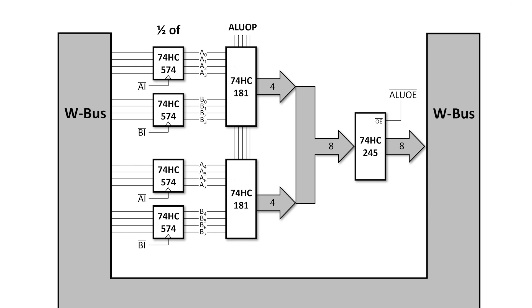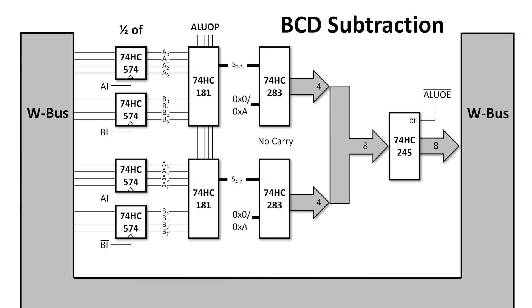This is the ALU configuration we have for the SAP 6502. Two octal D-type flip-flops receive their values from the W bus. They latch them, then present them to two 74HC181 ALU units. The ALUs then communicate the answer back to the W bus through a 74HC245. The big change I want to make now is to put another pair of adders, these 74HC283s, between the output of the ALU and the 74HC245 driving the W bus.